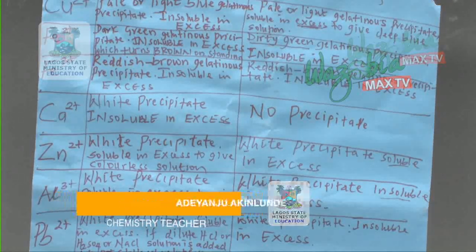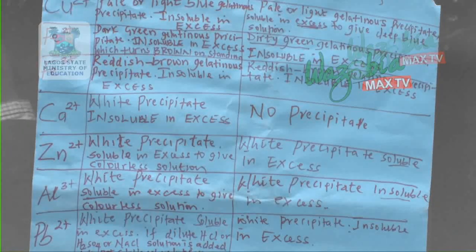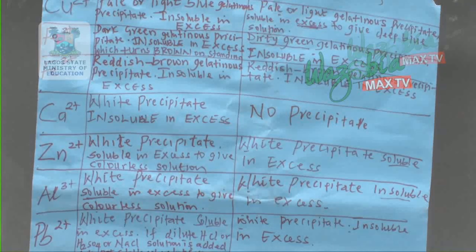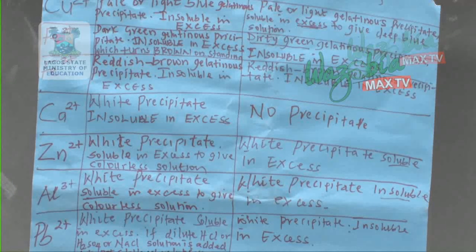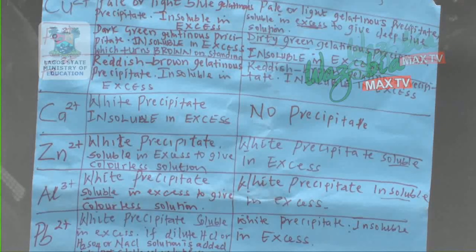Let us look at ammonia. Ammonia is a gas. You only identify ammonia gas by the odour — it has a pungent smell. You have to note that it is a pungent smell, and it is also choking. That is how you identify ammonia.